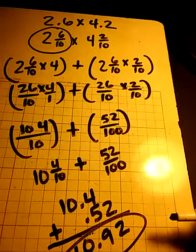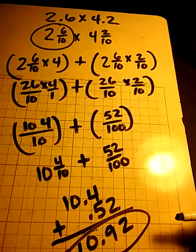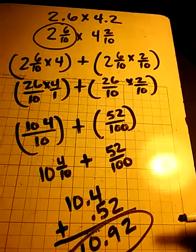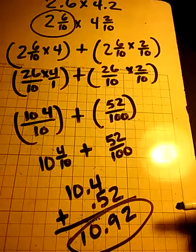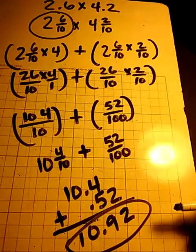Therefore, 2 and 6 tenths times 4 and 2 tenths is 10 and 92 hundredths.